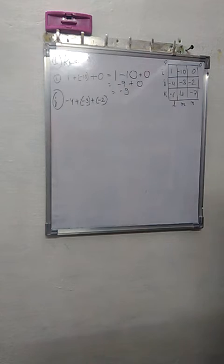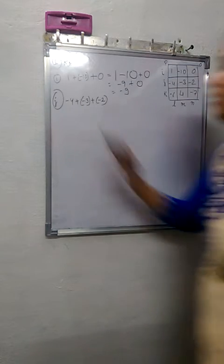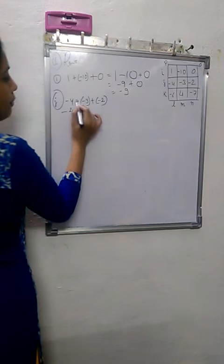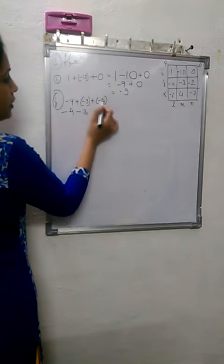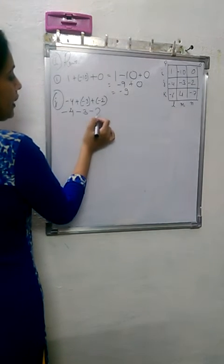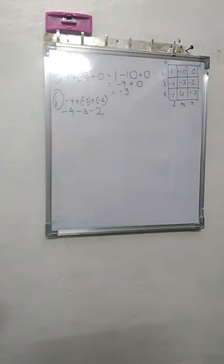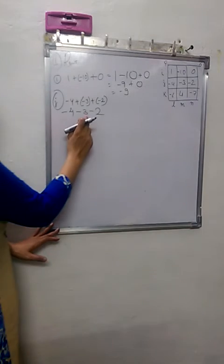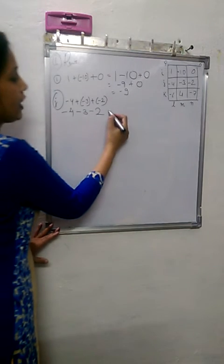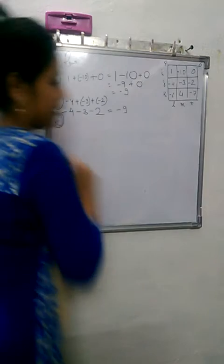Now we start J. This is J. Minus 4 plus minus gives us minus. 3 plus minus gives us minus. All are negative, so they all will be added. 4 plus 3 is 7. 7 plus 2 is 9. Answer will be minus 9.